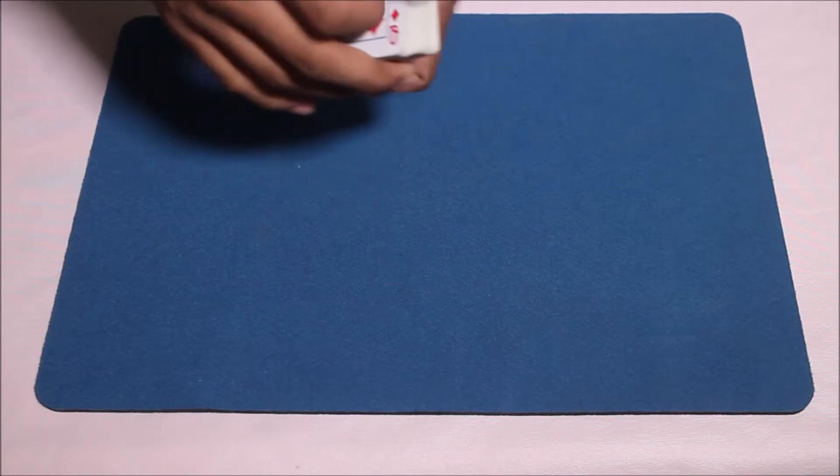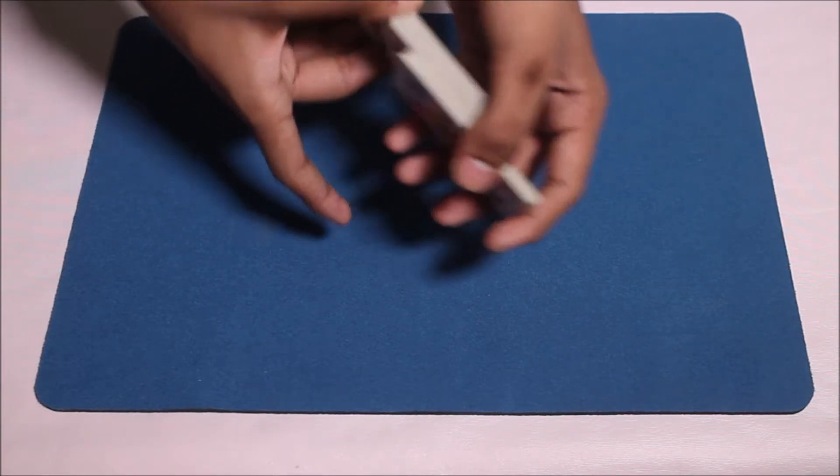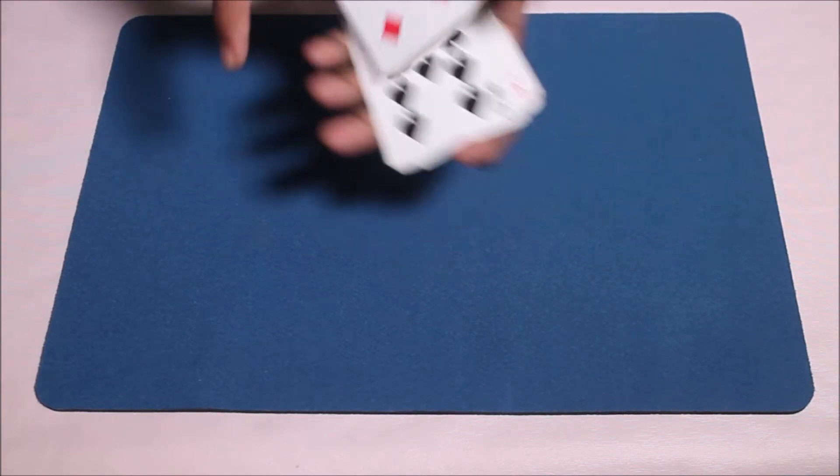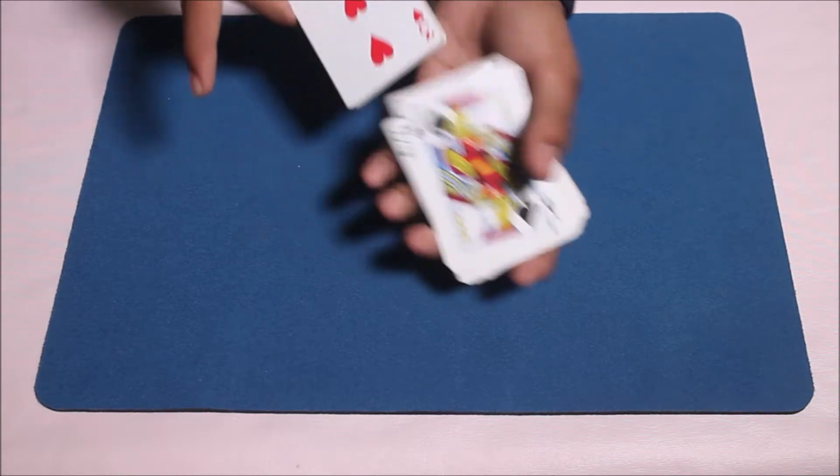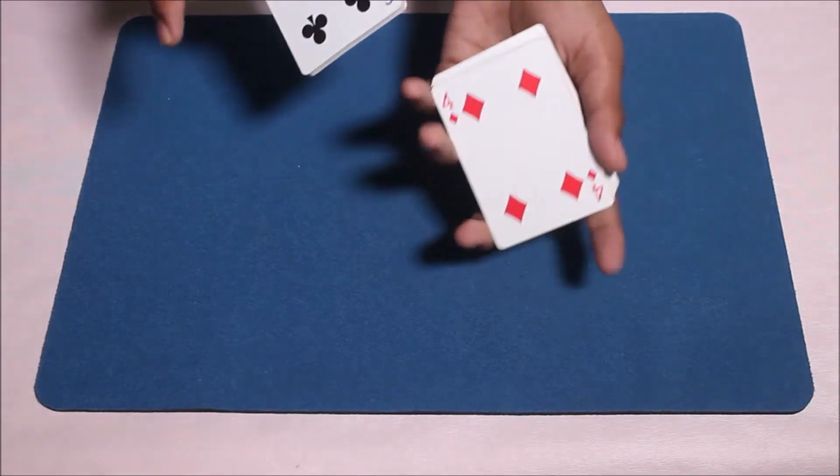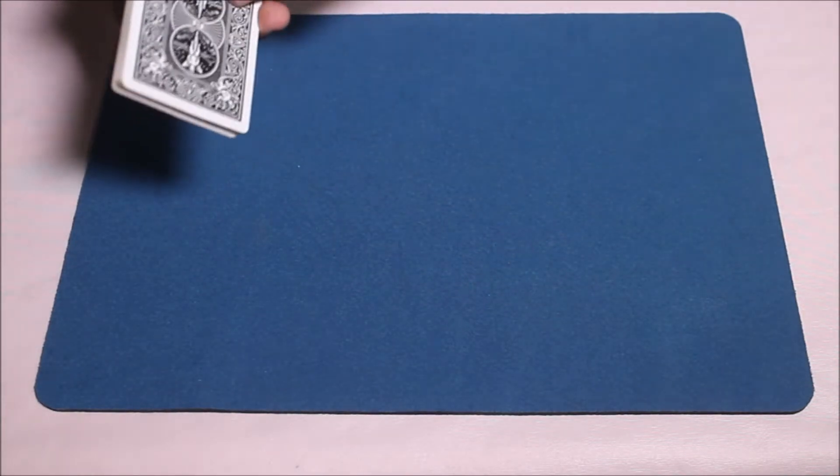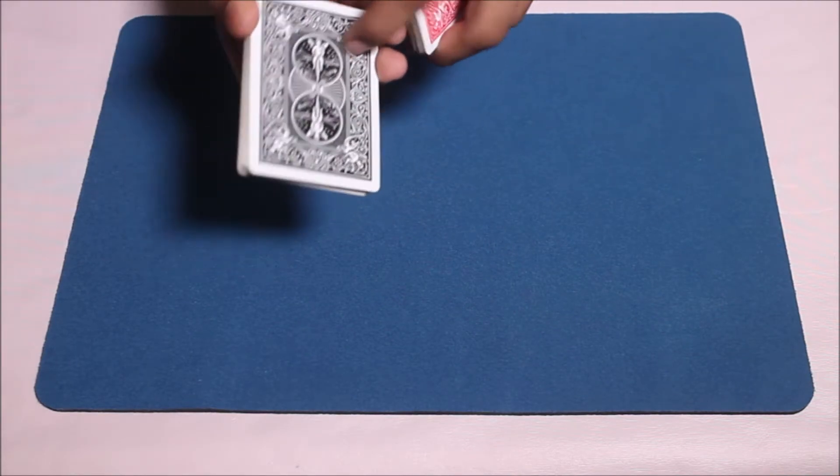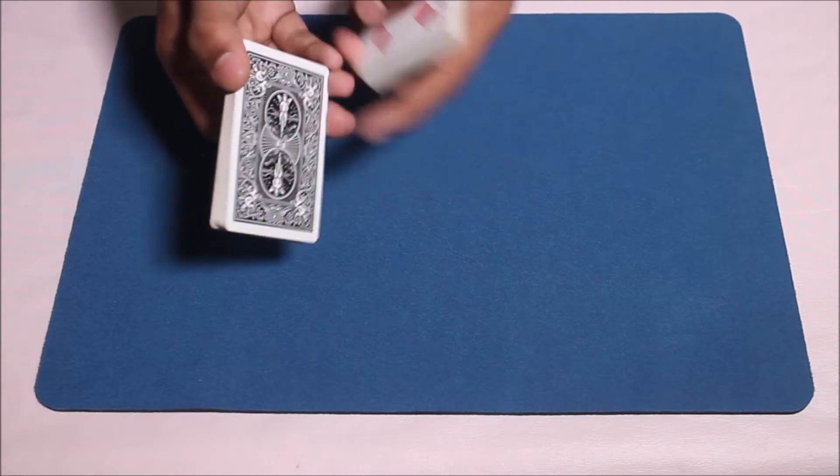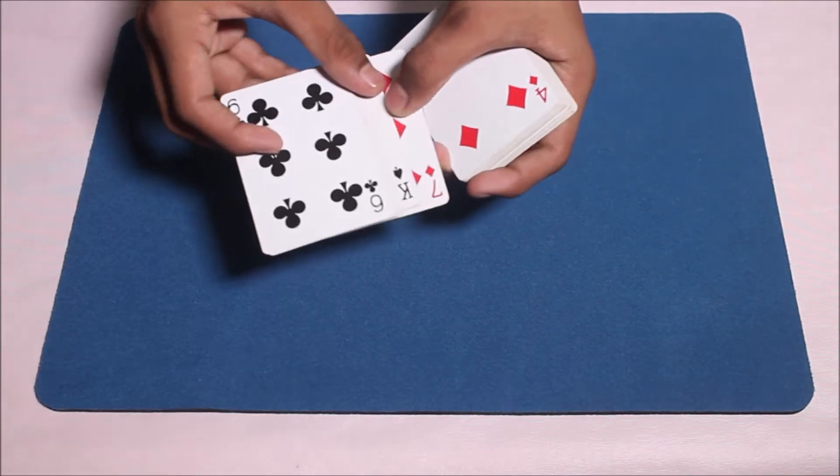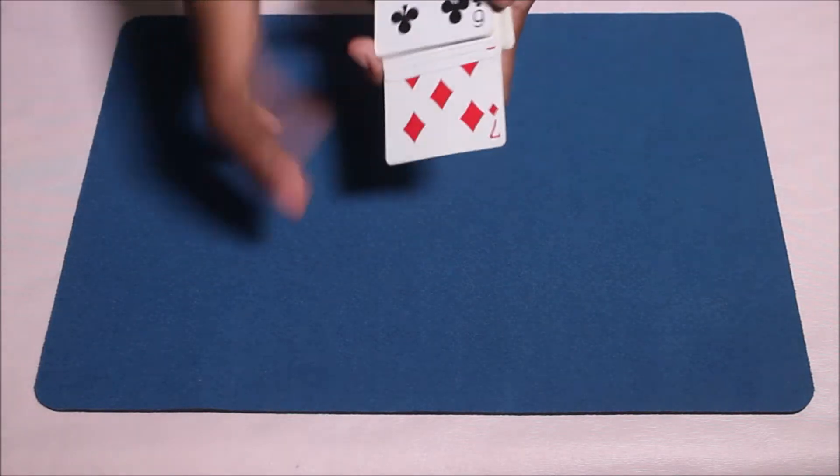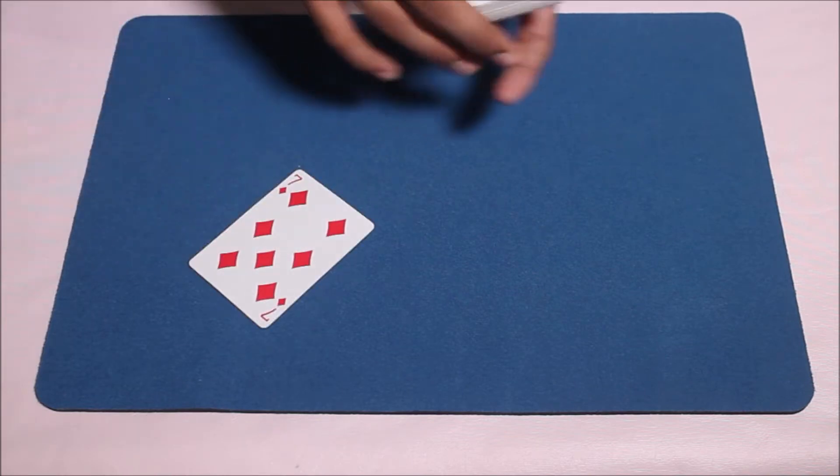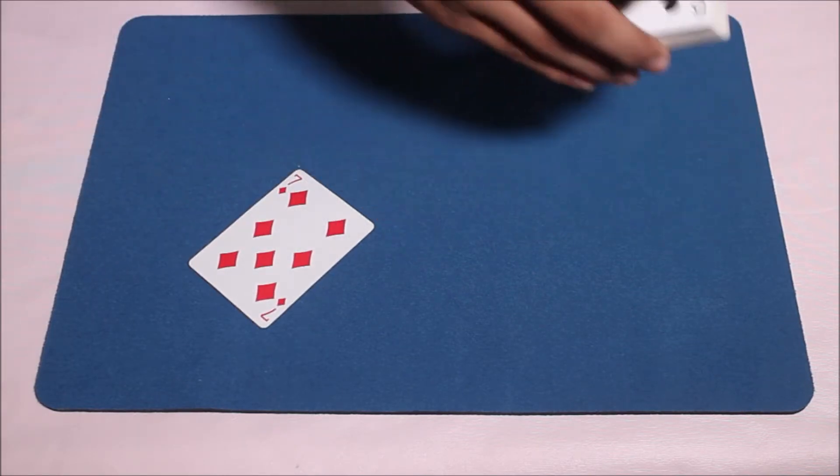Maybe do another shuffle. Now you're taking cards from the bottom and shuffling like this, and let the spectator stop at any point. Let's say they stop here, and then you show this card. Actually, they didn't stop at this card, but you show this card. Don't flash this. Show this card, take it out, show them that's the card they selected. Put it down face up, not face down.